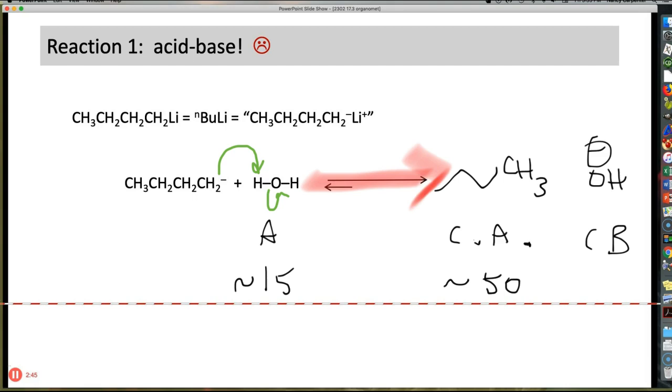Here's my acid with a pKa of around 15, and here's my conjugate acid with a pKa of about 50. So needless to say, this really happens very quickly. So beware: organolithiums and organomagnesium reagents, a.k.a. Grignards, cannot exist in the presence of any kind of acidic hydrogen. You have been warned.